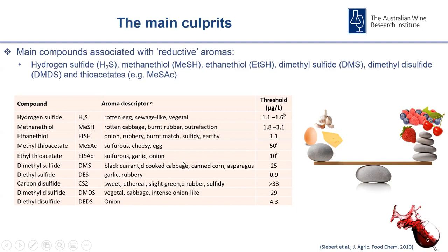An important takeaway is the low aroma thresholds. The compounds most important for reductive aromas — H2S, methane thiol and ethan thiol — have very low aroma thresholds, so very small amounts have a very large impact on wine aroma. These thresholds are also just a guideline; people's perception of sulfur compounds is quite unique. Some people are very sensitive and a tiny amount can really impact their perception of the wine, whereas other people can't smell it at all.